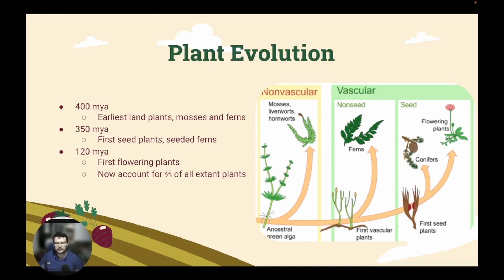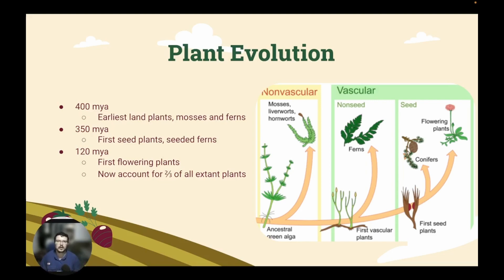About 350 million years ago, we get our first seed plants or seeded ferns. This is when vascular structures would have started to take place — basically plants that start to produce stems and have modified structures like pollen designed specifically for reproduction on earth. After that, we have the first flowering plants about 120 million years ago, and these flowering plants now account for about two thirds of all extant or living species on earth.